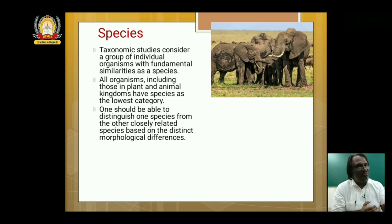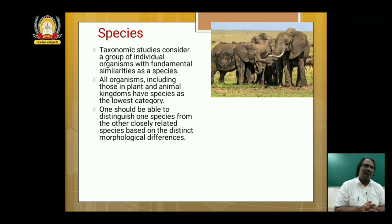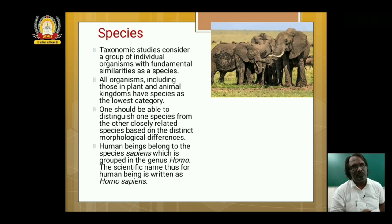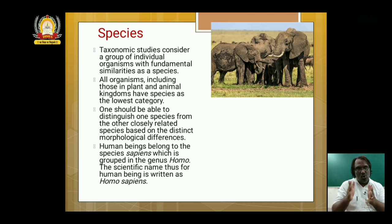When you look at a wolf and a dog, you should identify they are different — wolf is a different species, dog is a different species. In the same way when you see the neem tree and a mango tree, you have to identify the morphological differences. External appearance differences have to be identified for the different species. Human beings belong to the species sapiens, which is grouped in the genus Homo. Hence the scientific name of human beings is Homo sapiens. Homo refers to the genus name; sapiens refers to the specific epithet or species name.